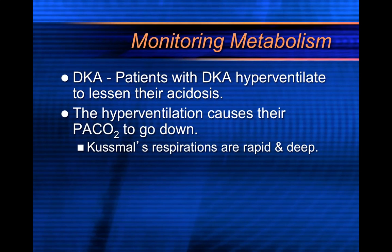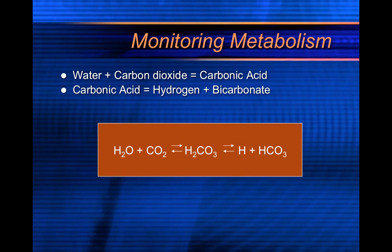So DKA — patients with DKA, or diabetic ketoacidosis, they hyperventilate to lessen their acidosis. They have deep, rapid ventilations. What they're doing is trying to blow off CO2, because CO2 causes acid. So they're trying to compensate for metabolic acidosis with respiratory alkalosis. You can't truly do that, but your body tends to try. So they're causing their PaCO2 level to go down — and this is why we call CO2 acid.